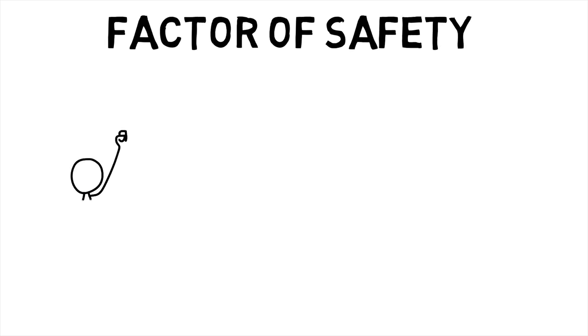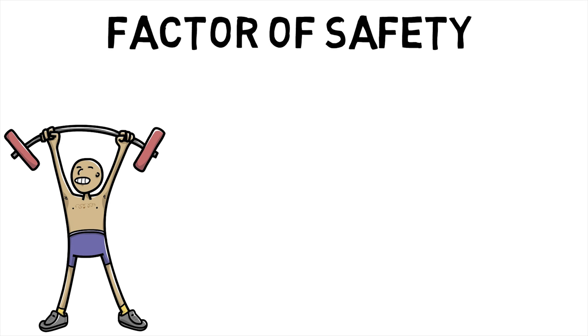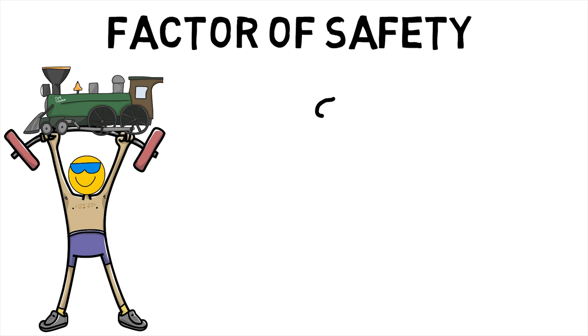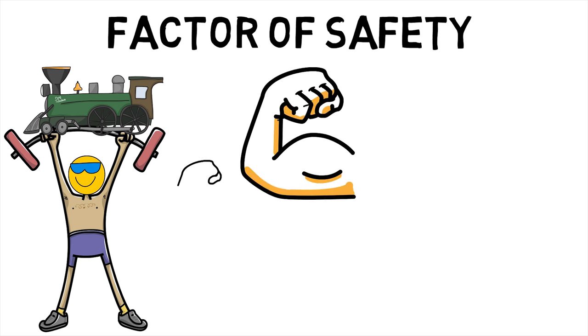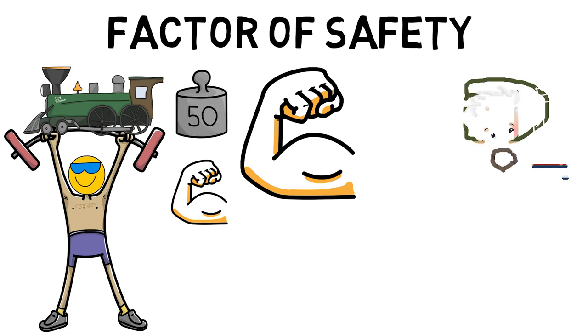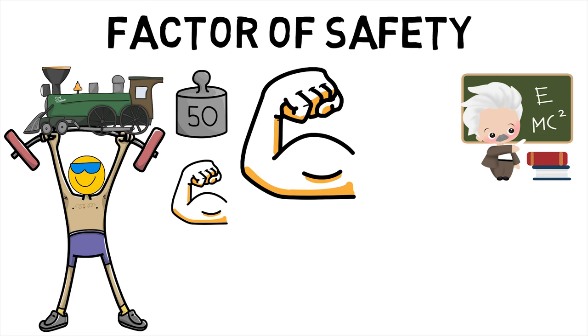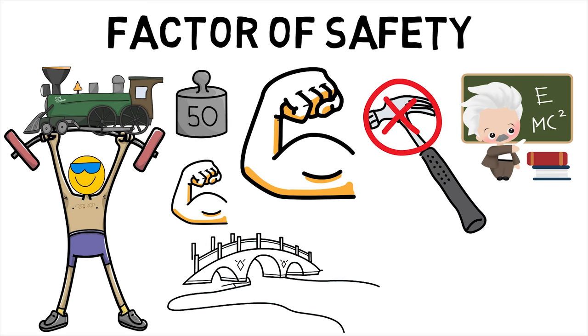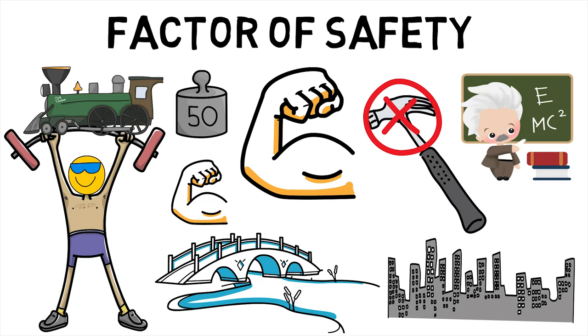Factor of safety is a term describing the load carrying capacity of a system beyond the expected or actual loads. Essentially the factor of safety is how much stronger the system is than it usually needs to be for an intended load. Safety factors are often calculated using detailed analysis because comprehensive testing is impractical on many projects such as bridges and buildings.